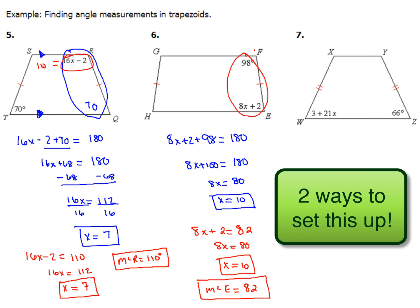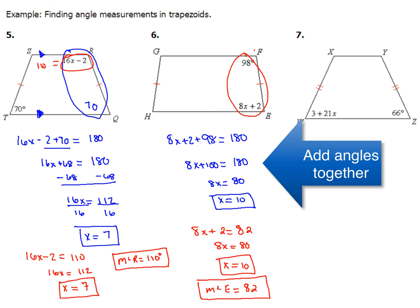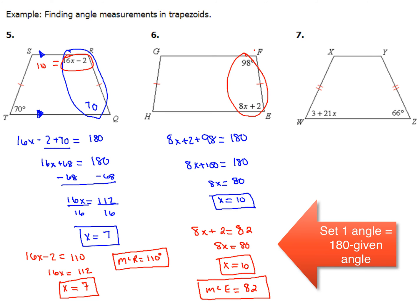So how'd you do with that? You could have set it up either way, and you come up with a value of 10 for x. You can either add both angles up, set them equal to 180, and solve for x that way,